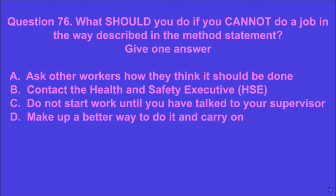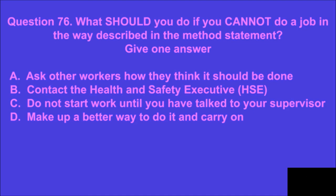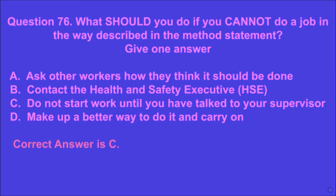Question 76: What should you do if you cannot do a job in the way described in the method statement? Give one answer. A: ask other workers how they think it should be done, B: contact the Health and Safety Executive (HSE), C: do not start work until you have talked to your supervisor, D: make up a better way to do it and carry on. C is the correct answer.